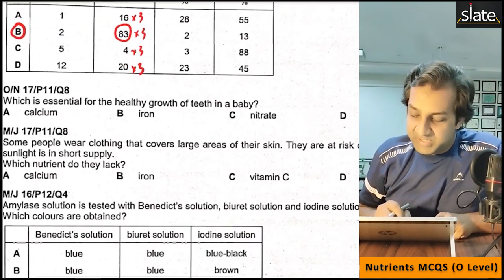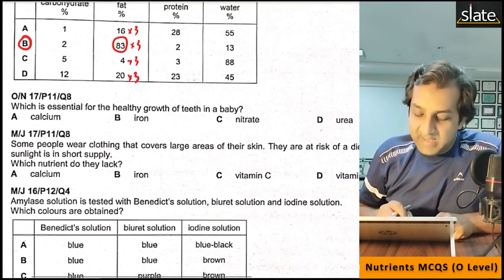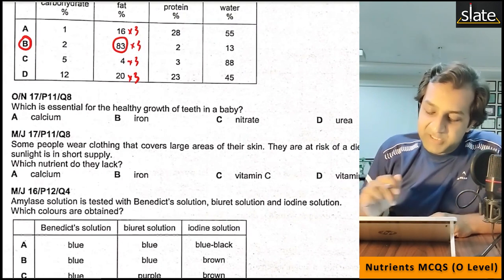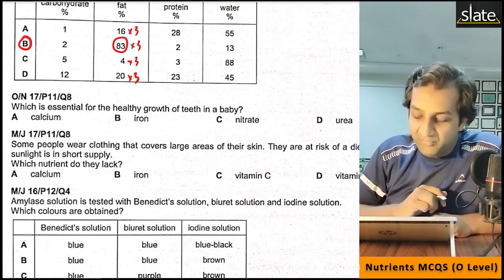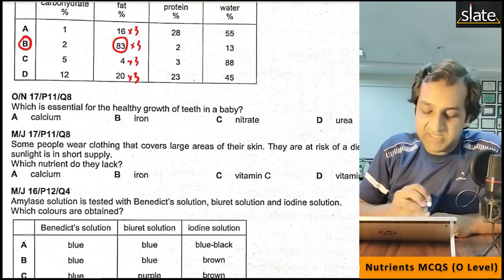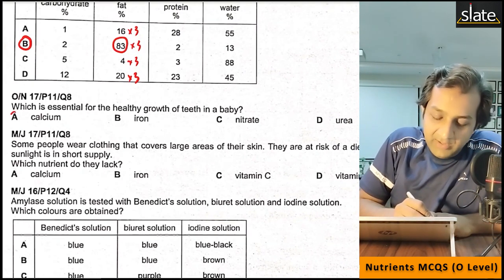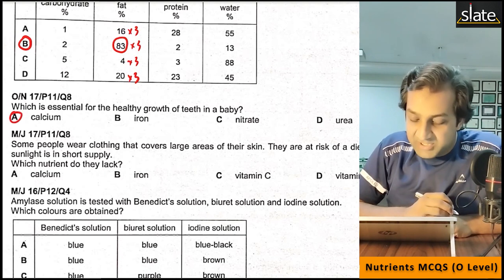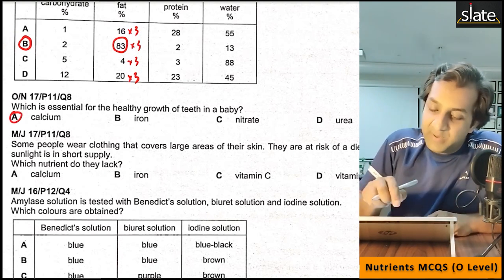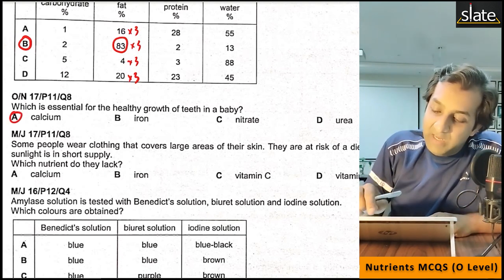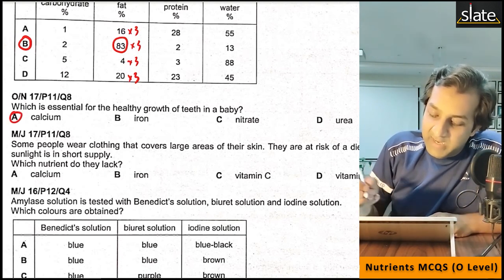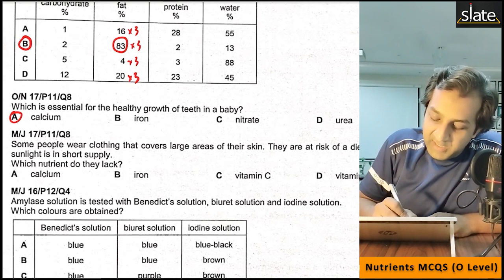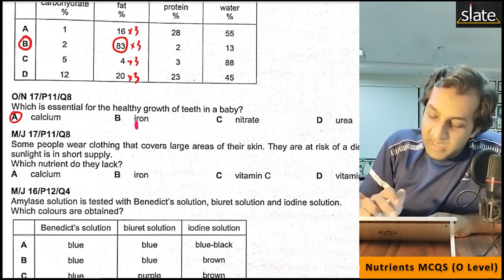Next question: for a baby's healthy growth of teeth, what is needed? Calcium. For iron — if iron is deficient, you get anemia. What should iron be used for? Iron deficiency causes anemia.